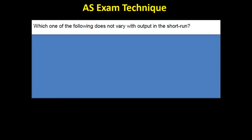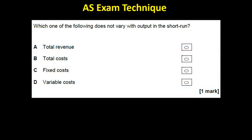So, here are some examples and I've covered up the answers. Which of the following does not vary with output in the short run? Now, if you know your formulas, fixed costs don't vary with output in the short run. As soon as I see that question, I know what the answer is. I'm just looking for fixed costs and there it is, answer C.